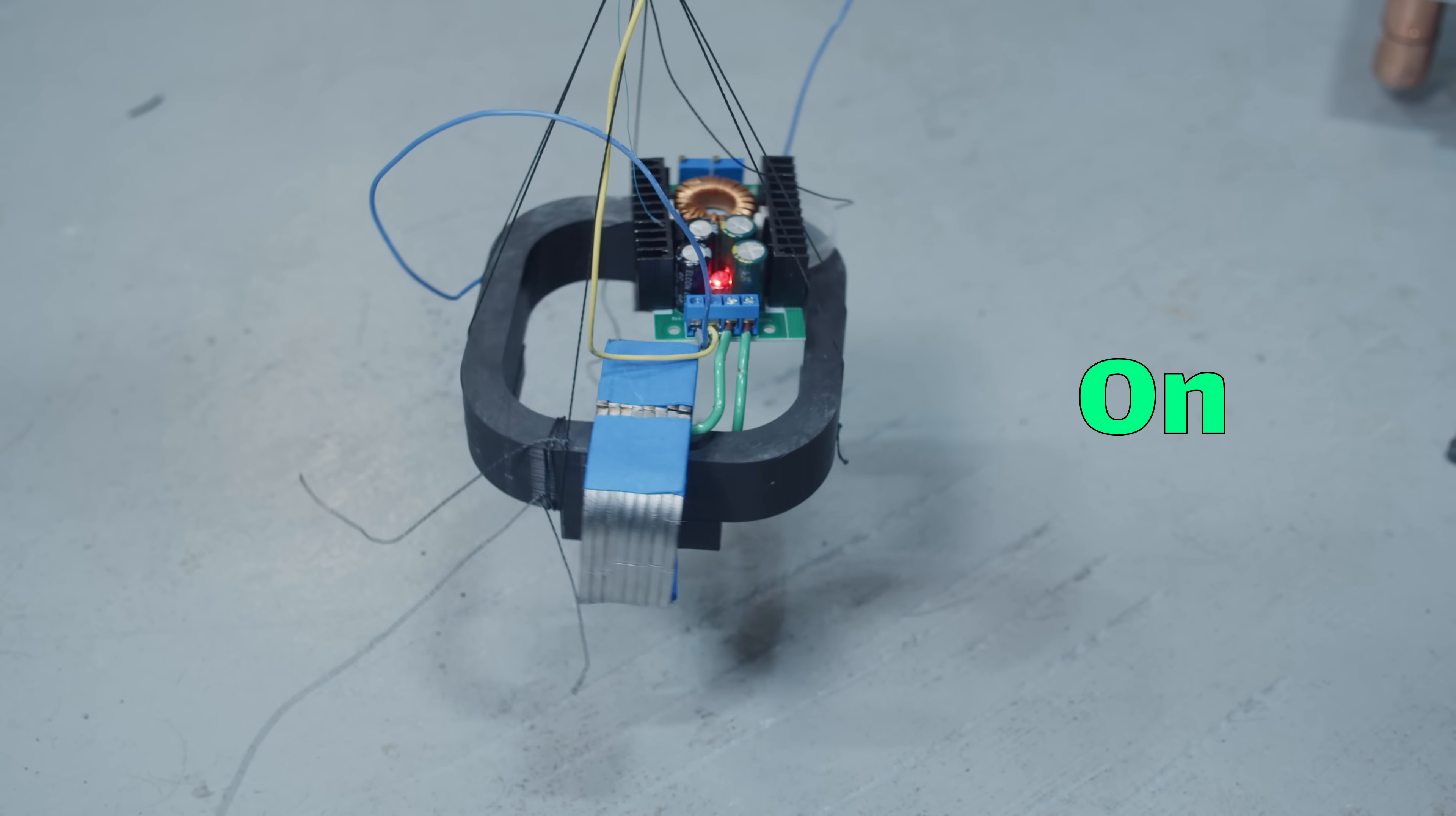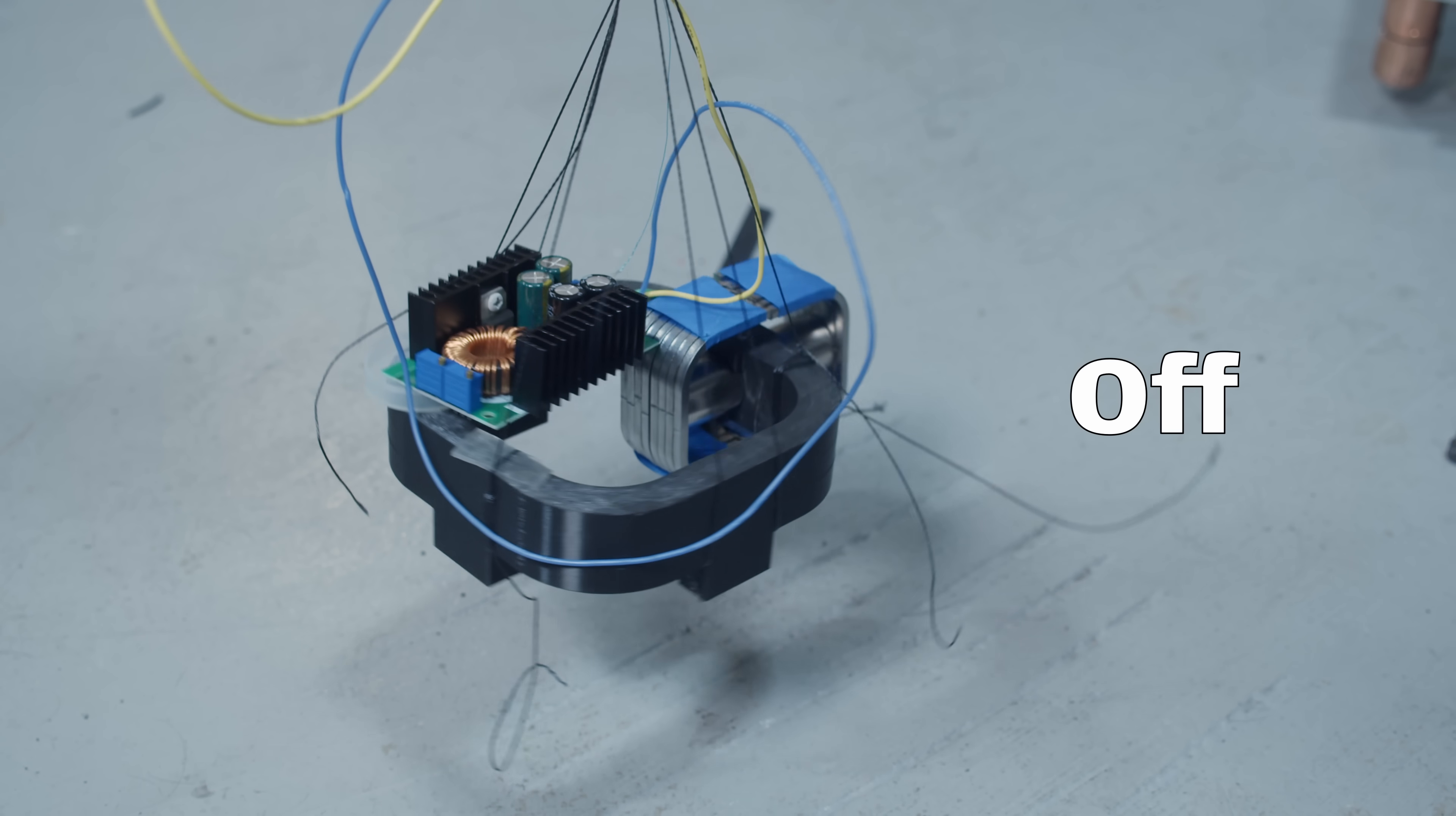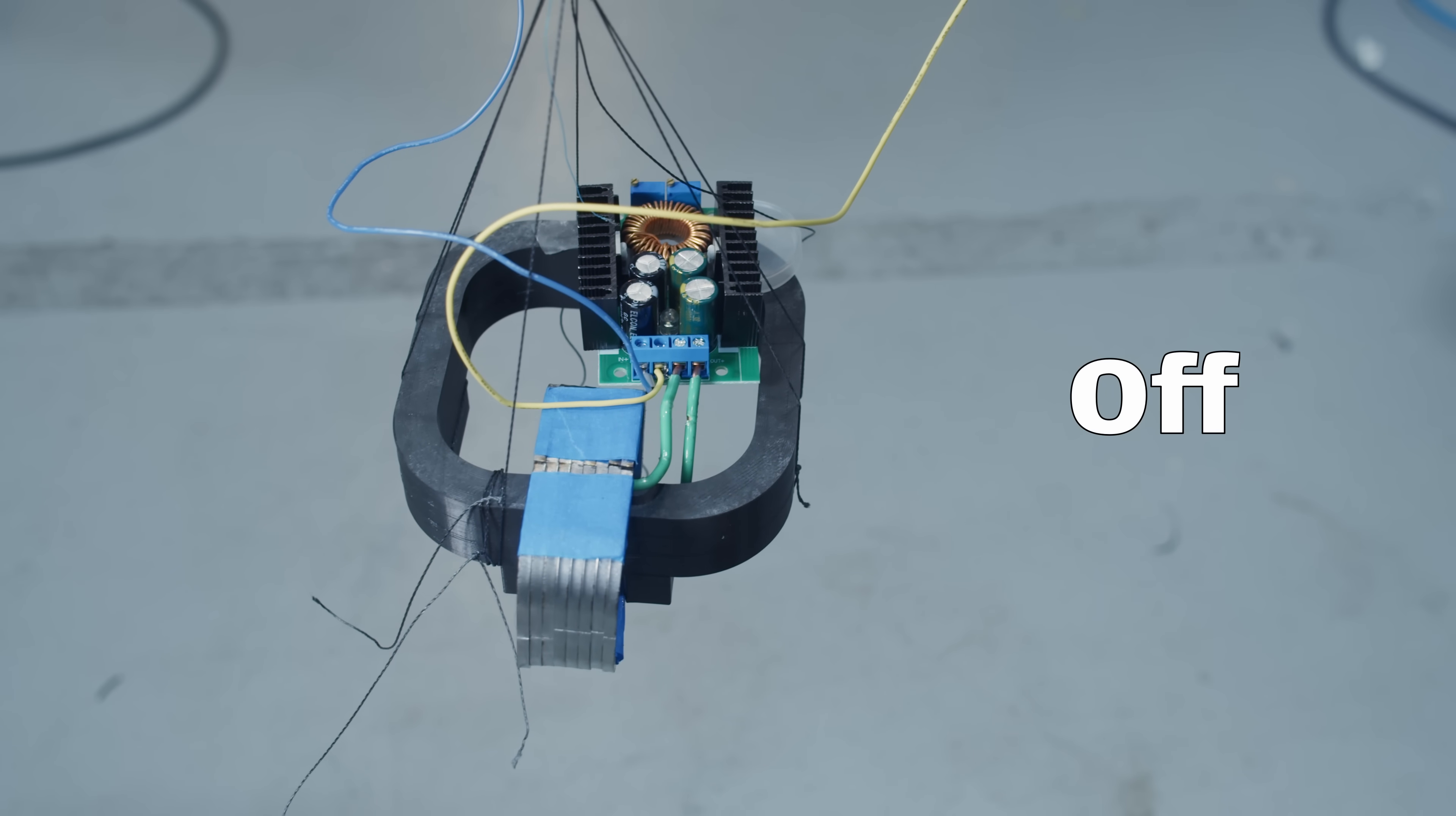The circuit board that's sitting on top there, that's a buck converter, and it's used to step down the voltage. And that's actually one of the big disadvantages of this kind of device, the power situation. Liquid metal is highly conductive, it's metal after all,